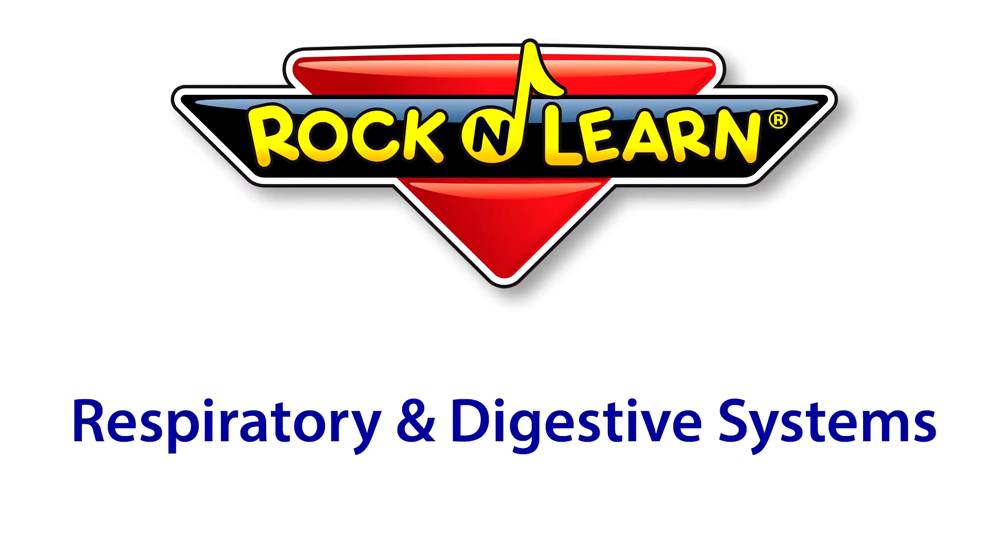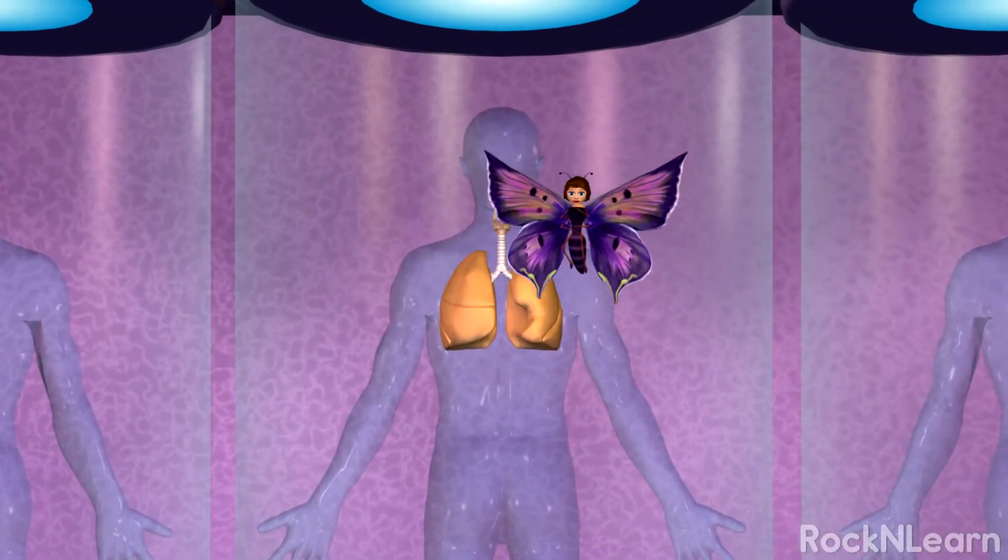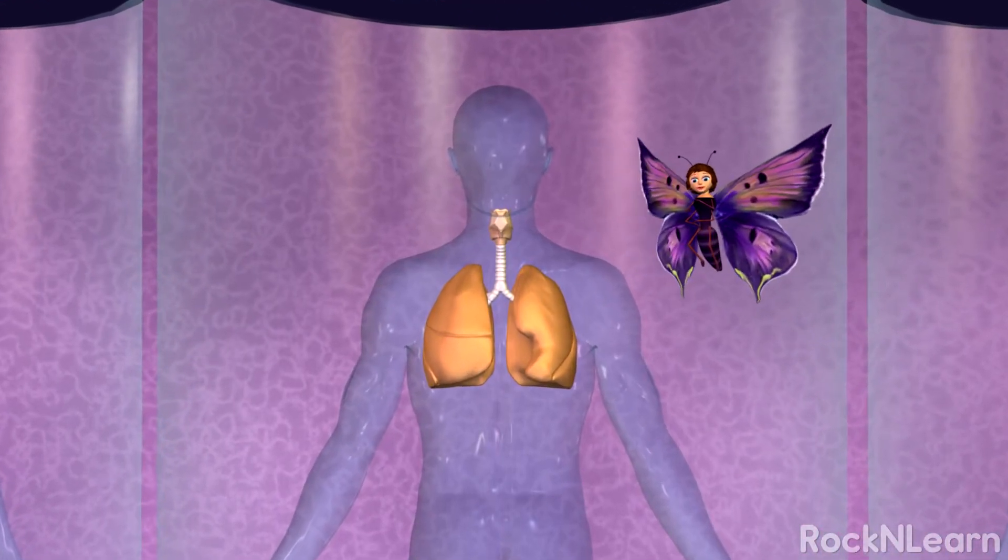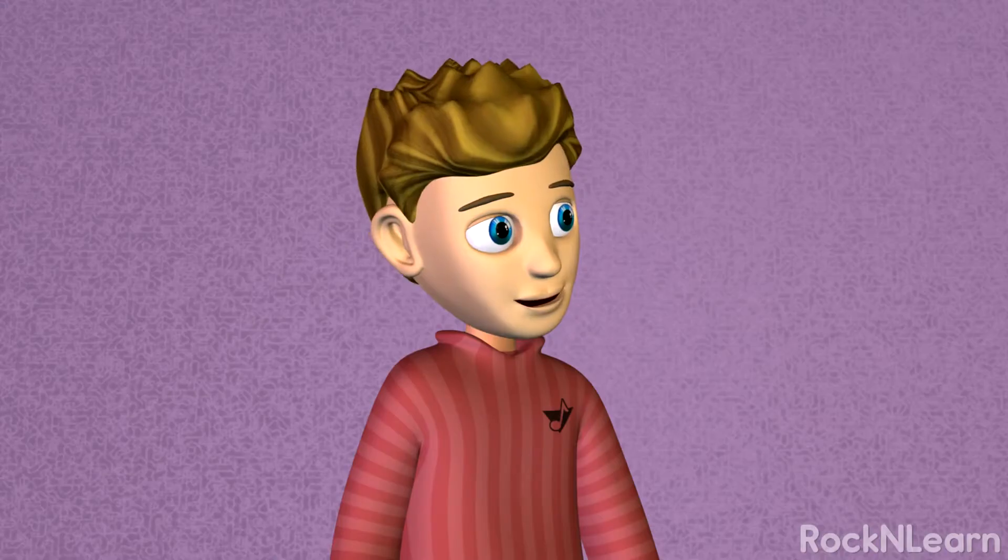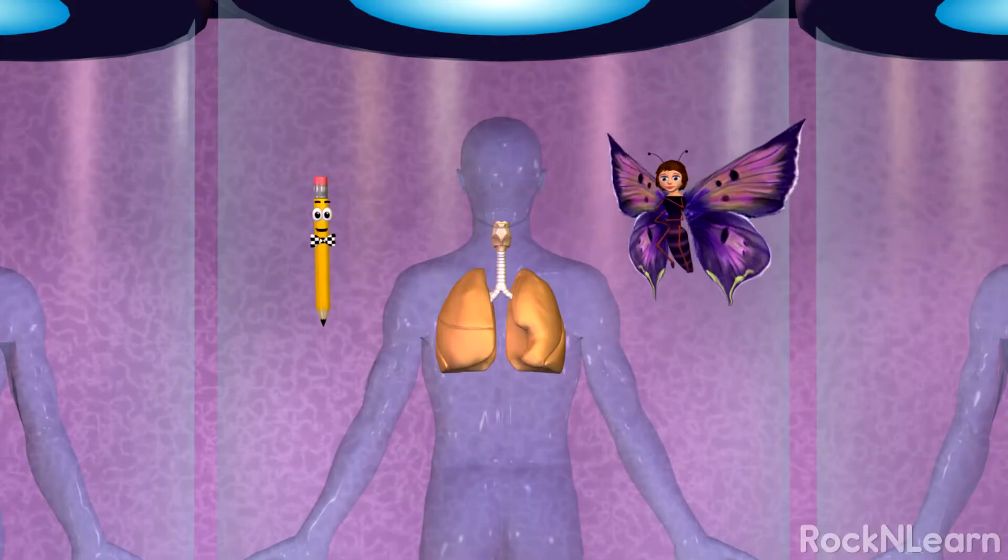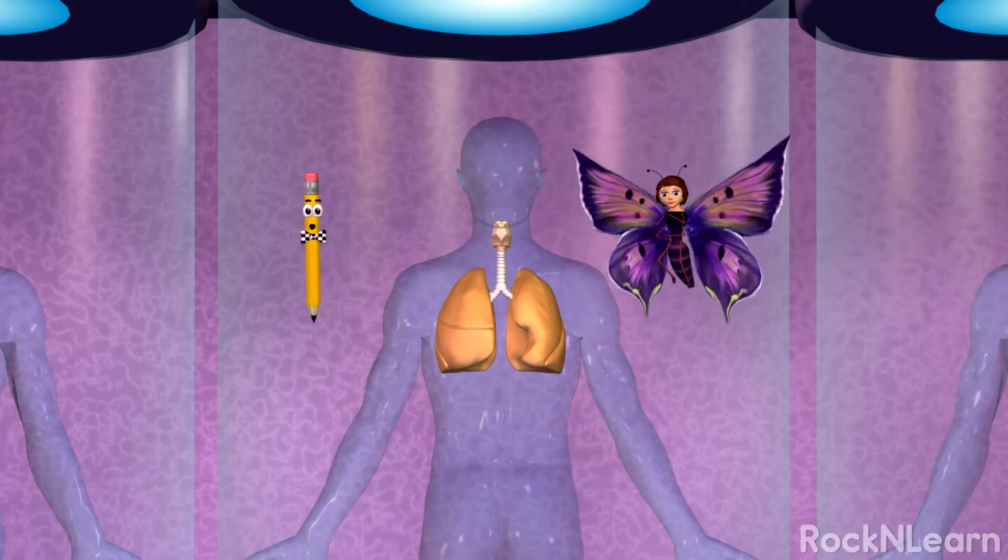Rock and Learn. The respiratory system allows oxygen into the blood and lets carbon dioxide leave the blood. That sounds simple enough. But let's go through all the parts of the respiratory system so we can understand how it works.